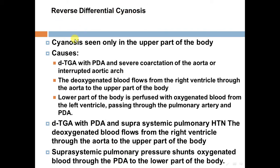Reverse differential cyanosis is cyanosis seen only in the upper part of the body. Causes include D-TGA with PDA and severe coarctation or interrupted aortic arch. The deoxygenated blood flows from the right ventricle through the aorta to the upper part of the body, while the lower part of the body is perfused with oxygenated blood from the left ventricle passing through the pulmonary artery and PDA. In D-TGA with PDA and suprasystemic pulmonary hypertension, suprasystemic pulmonary pressure shunts oxygenated blood through the PDA to the lower part of the body.